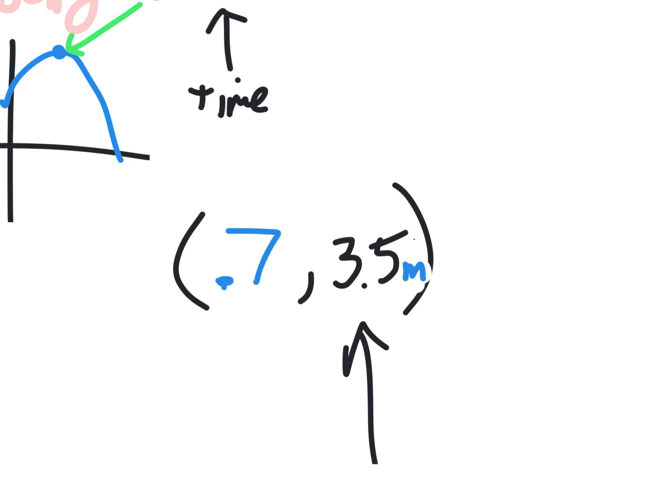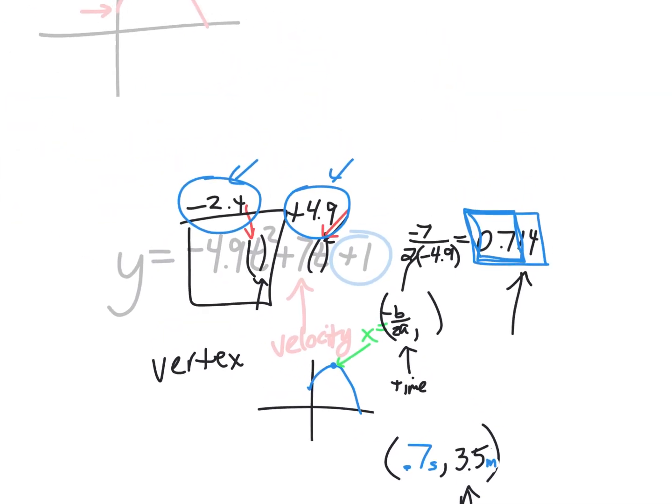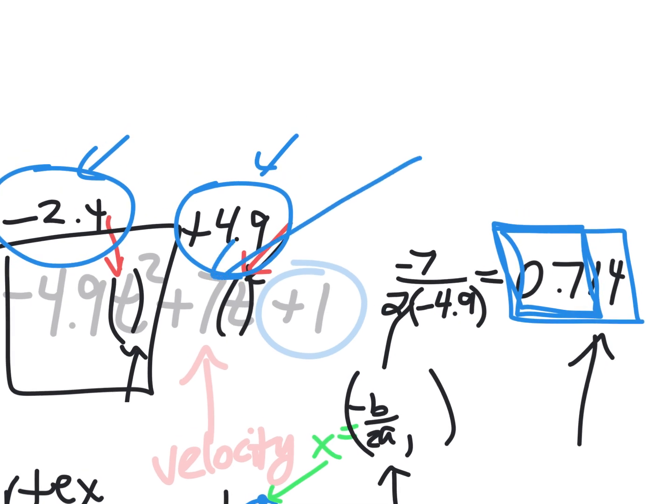So I threw the ball and it went to its peak of 3.5 meters at 0.7 seconds — less than one second. Was that a super strong throw? No — 7 meters per second really isn't very fast; everyone in this room could do that. Some of you might be able to throw 35 meters per second, reaching its peak at around one second.